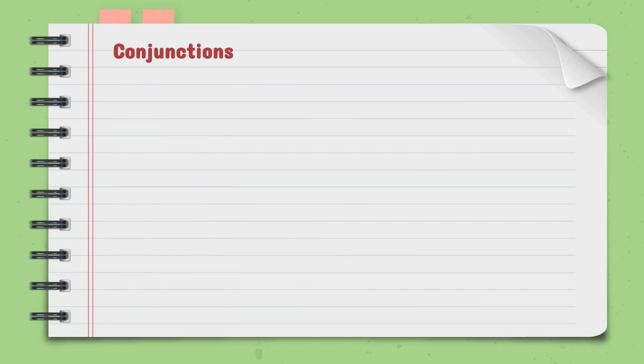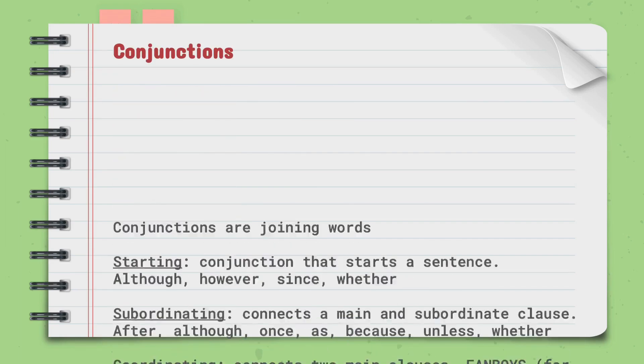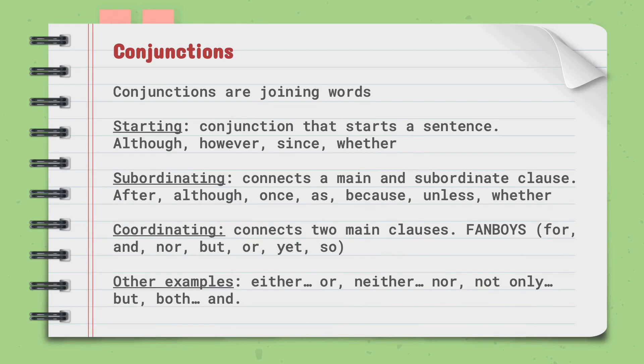Now, let us look at conjunctions. Conjunctions are joining words. Starting conjunctions are conjunctions that start a sentence. Examples are although, however, since, or whether.